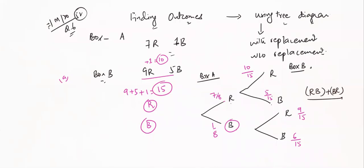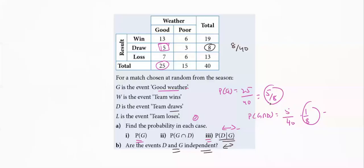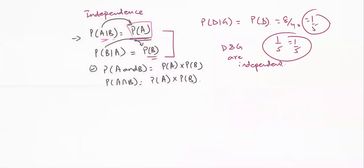Looking at paper 9709, question number 6 from February/March 2020, paper 52. This question has part A and part B. One question similar to this — find the probability in each case, intersection conditions, and are the events D and G independent? I have made a new similar question so you don't just rely on what you've already attempted. In past papers, most events are not independent, but this one is independent, so go through this.